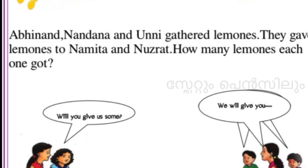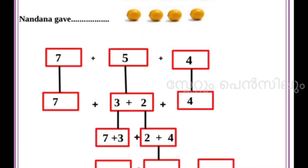They gave lemons to Namida and Nusrat. How many lemons did each one get? Will you give us some? How many of you know? Abhinand, Nandana and Unni said: we will give you. So, we call it Namida.